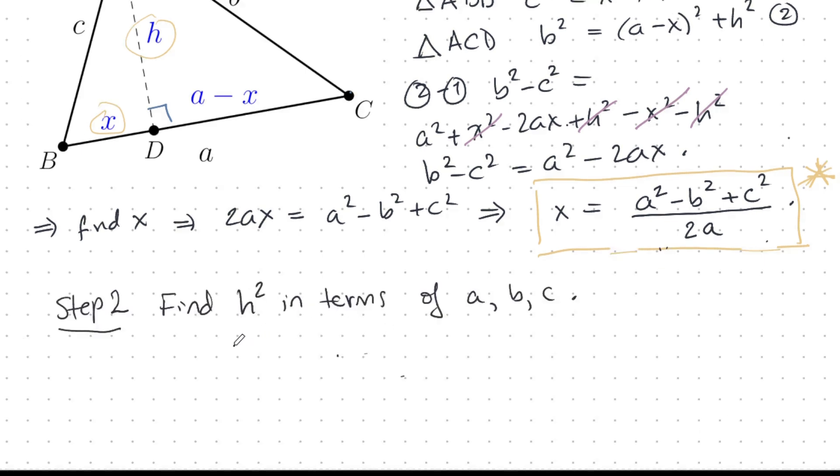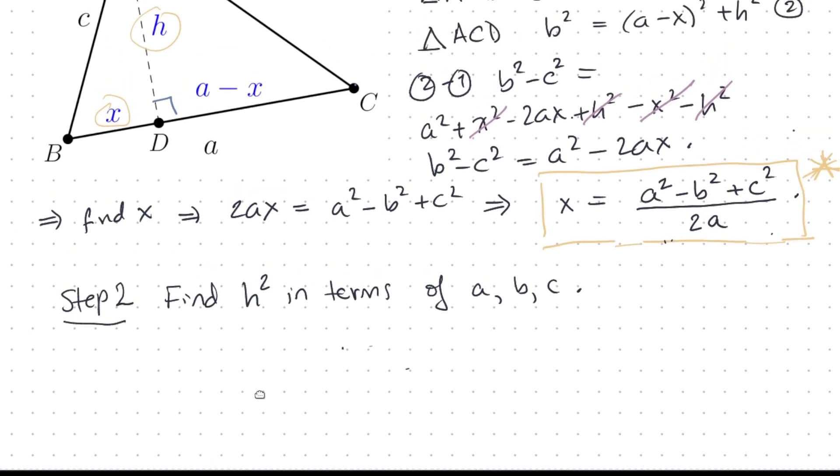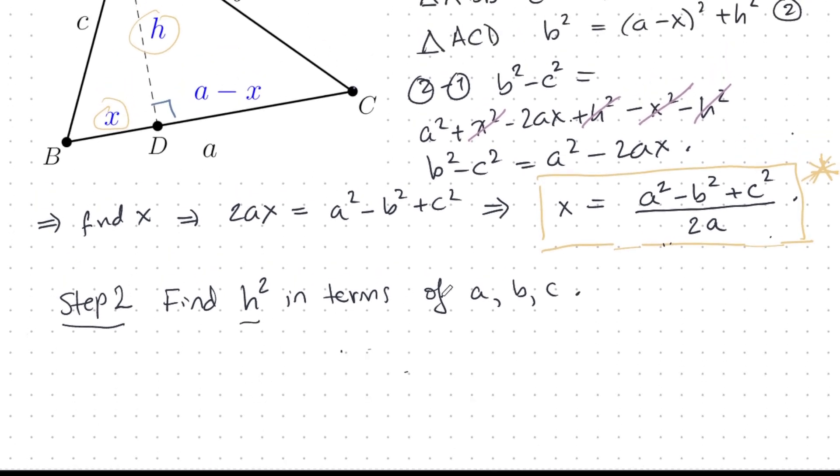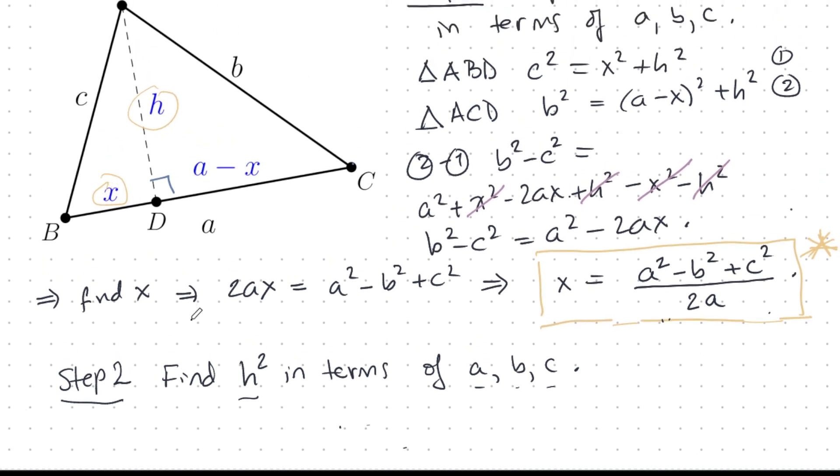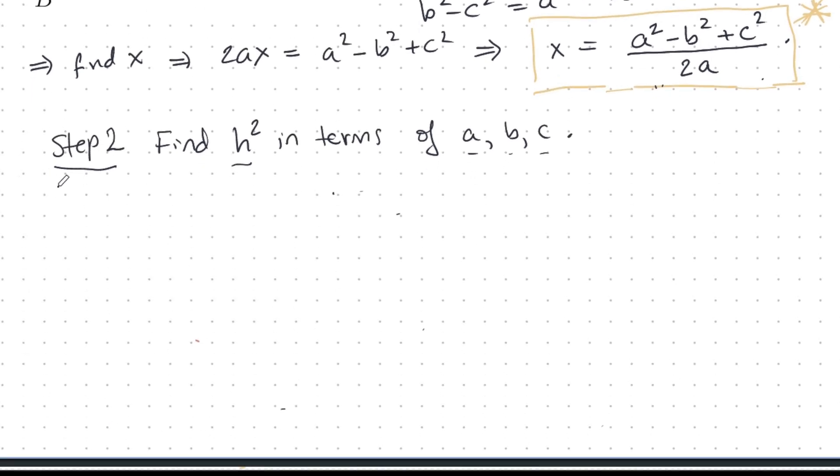Step two is just a lot of algebra. We want to find H squared in terms of A, B, and C. We can do that here. H squared is C squared minus X squared. And then we can apply a lot of interesting algebra.